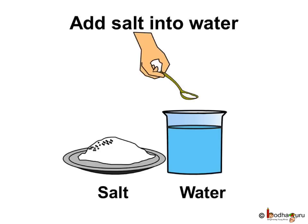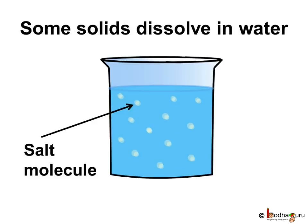When we add sugar or salt in the water it dissolves. Why is it so? We already know that molecules in the liquid are loosely packed, so there is space between the molecules of liquid water, and within this space the molecules of sugar or salt fit in when mixed with the water.